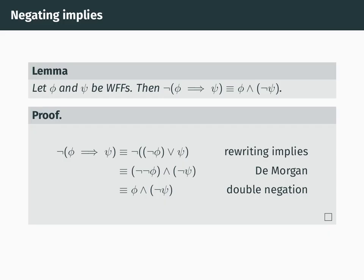We're now going to look at what it means for implies statements to be false, and specifically we'll look at a logical equivalence for the negation of phi implies psi. So the lemma here says that if you have any two well-formed formulas, phi and psi, then the negation of phi implies psi is logically equivalent to phi and not psi.